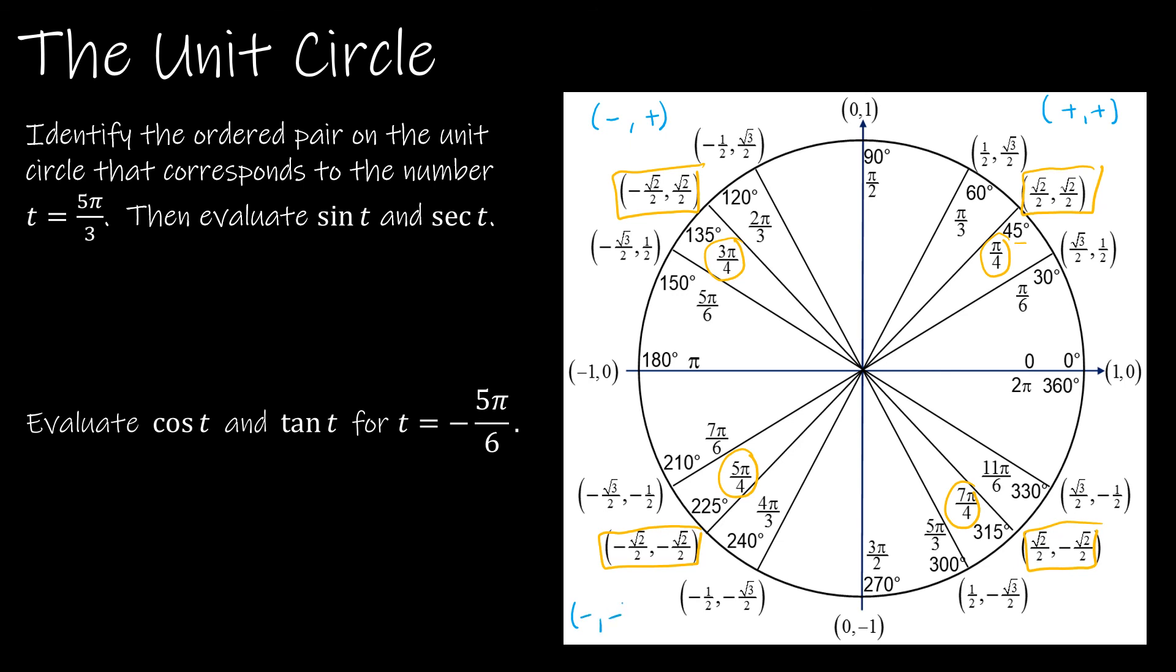This would be a negative x, negative y. This would be a positive x, negative y. So as long as I memorize this first quadrant, then I just have to know the nature of the values in each quadrant.